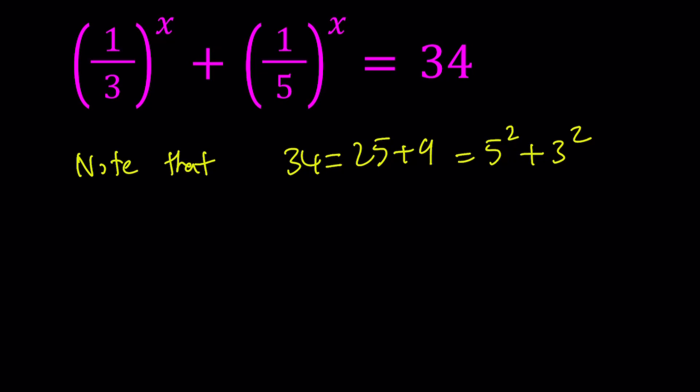Now we can write our equation as 3 to the power negative x plus 5 to the power negative x equals 3 squared plus 5 squared.